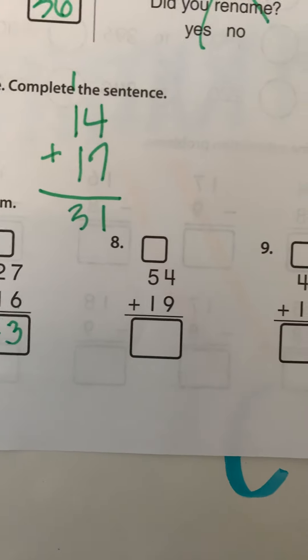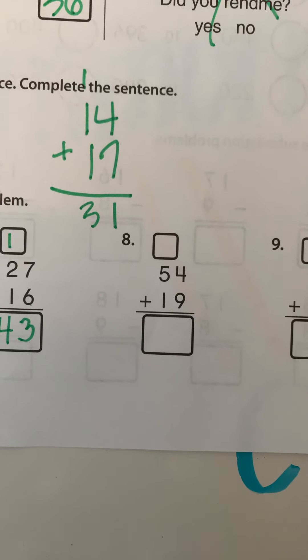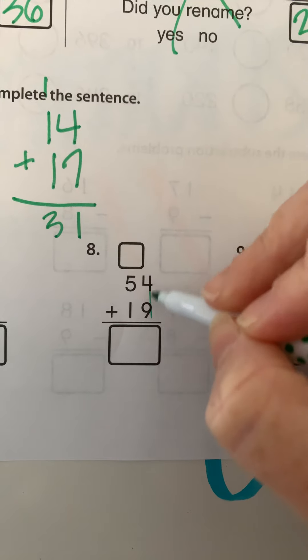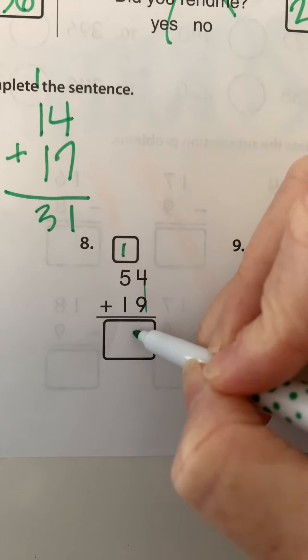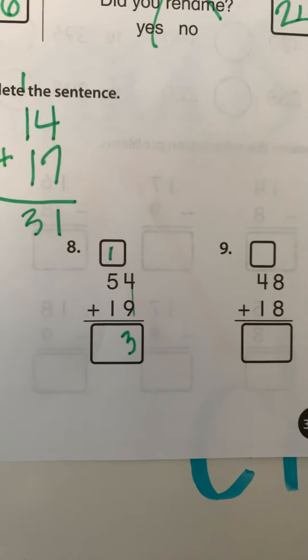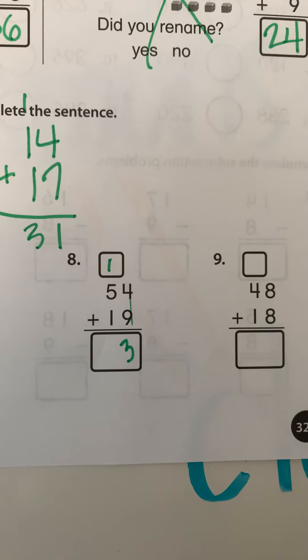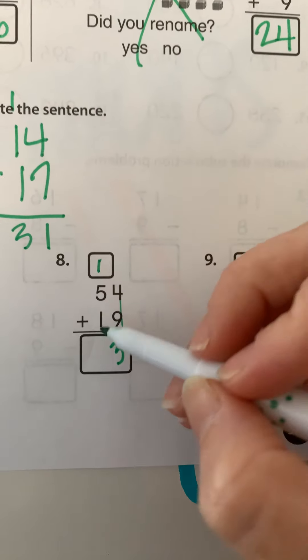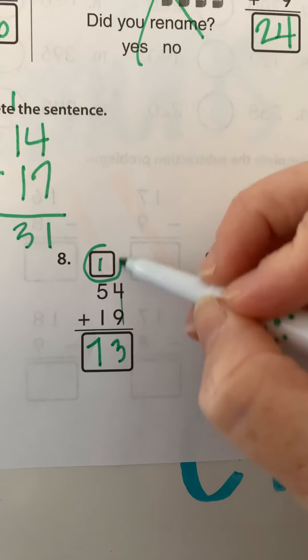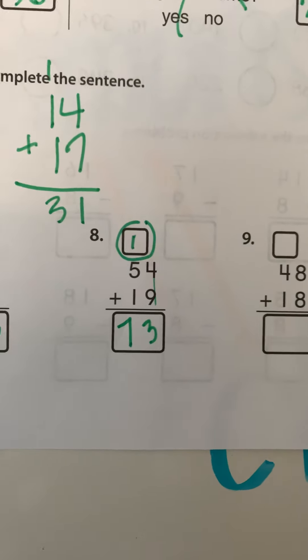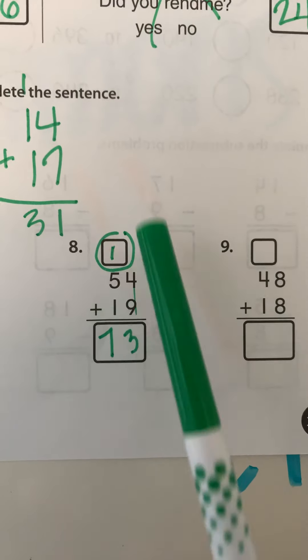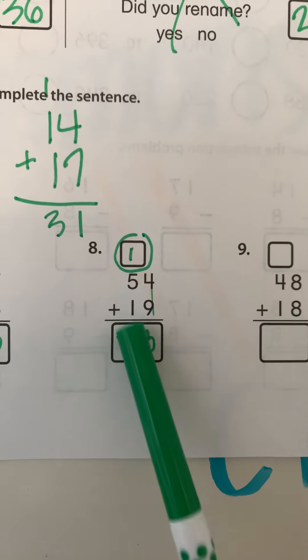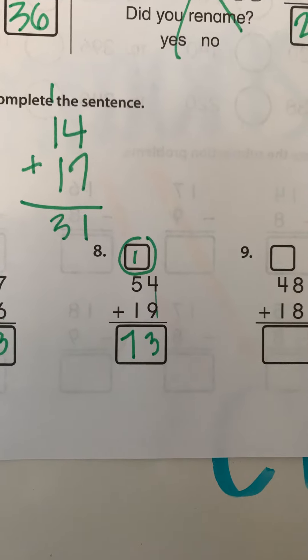Okay. Over here, 54 plus 19. Four plus nine, I have to do that first. Four plus nine is 13. There's my one. There's my three. Five plus one plus one. Well, five plus one is six. Plus one is seven. Don't forget to add the number up top. Sometimes you boys and girls do that. You add the numbers here and you forget that one. Don't forget to add all the ones in the row above the line.